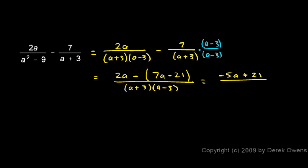So the numerator is negative 5a plus 21. The denominator I can just rewrite that as a squared minus 9, or you could leave the denominator like this, that would be okay too. But it's just a little simpler to write a squared minus 9 like that. And then you can put a box around it and you're done.